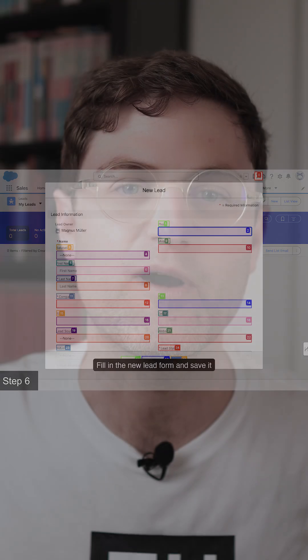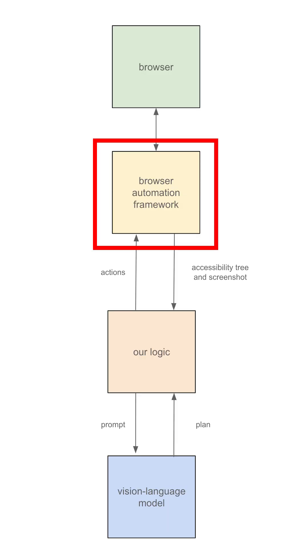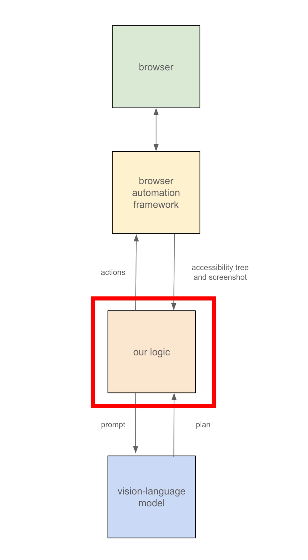For example, through a web browser. But how does it work? Let's take a look. At its simplest, a browser agent has four parts. Firstly, we have a foundation model, typically a vision language model. Secondly, we have a browser automation framework. Thirdly, a browser, which is often part of the browser automation framework. And lastly, we have our prompts and logic to tie it all together.